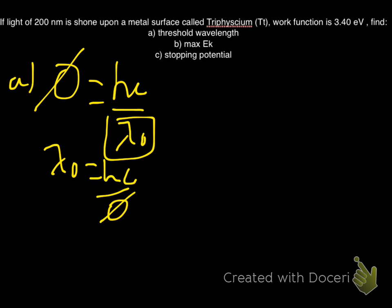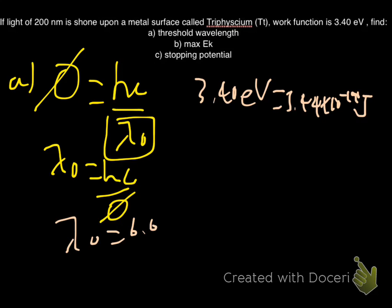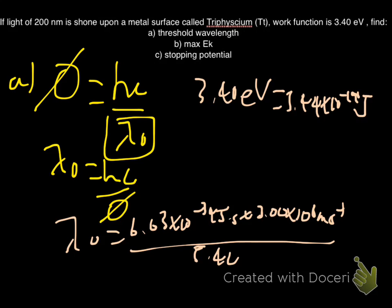But the work function is in electron volts. So 3.4 electron volts is equal to 5.44 times 10 to the negative 19 joules. Lambda-nought is now equal to 6.63 Planck's constant times the speed of light over the work function. Which should give me a wavelength of 366 nanometers. That's the maximum wavelength that we can use in order for us to free an electron.